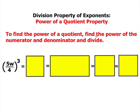To do that, you're going to find the power of the numerator and the denominator and divide and simplify. In this question, we have the quotient of 5w and 4 raised to the power of 3.